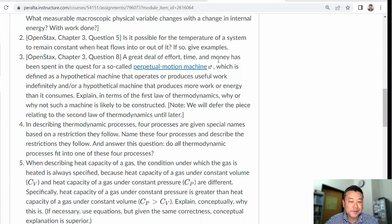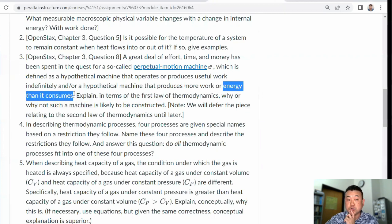Question three, when a great deal of effort, time, and money has been spent... Explain using the first law of thermodynamics why such a machine is not likely. It's not likely because energy is conserved. Based on the first law of thermodynamics, it certainly would not produce more energy than it consumes.